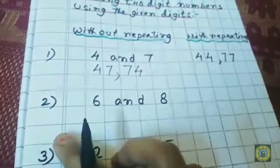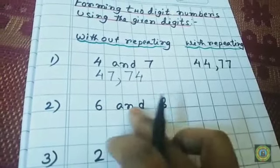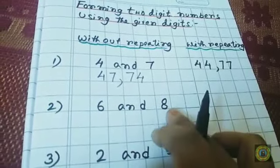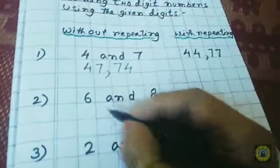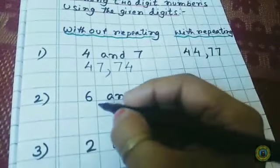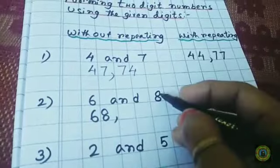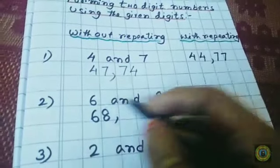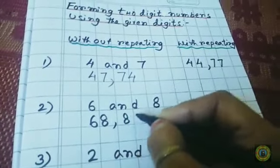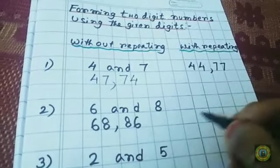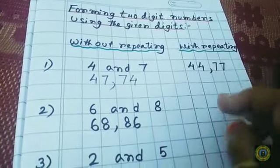Now question number two: six and eight, without repeating. Six, eight — sixty-eight. Reverse: eight, six — eighty-six. This is the without-repeating case.